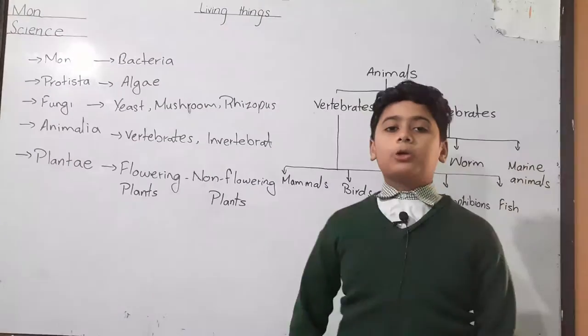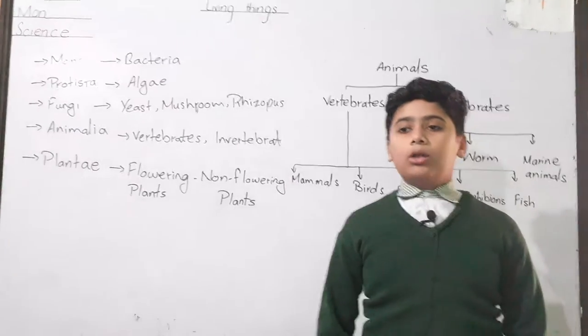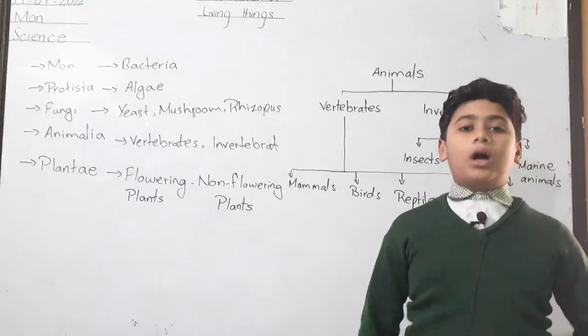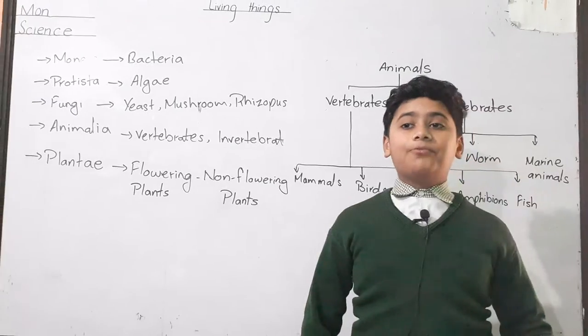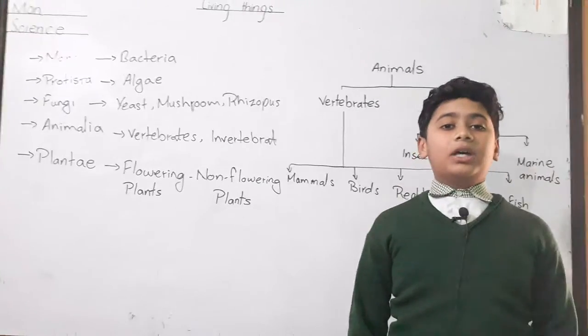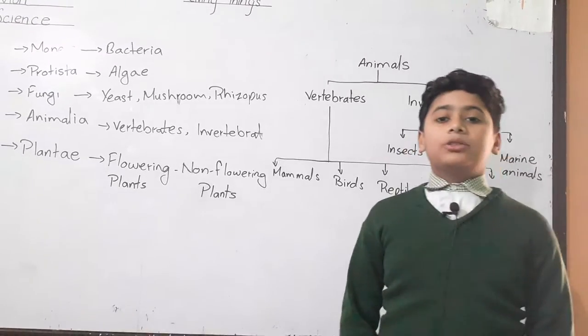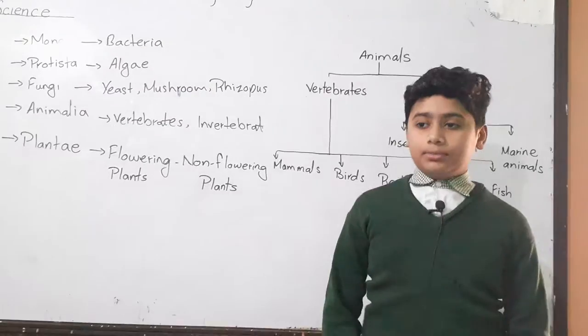I am telling you about Mammals. Mammals are also vertebrates. Humans are also mammals. Mammals give birth to babies. They feed their babies with milk. They have hair on their bodies.